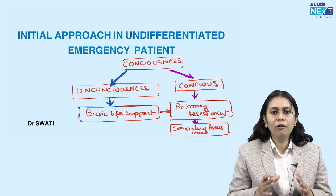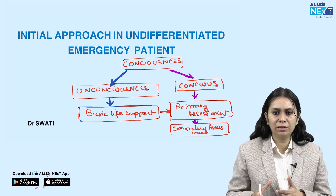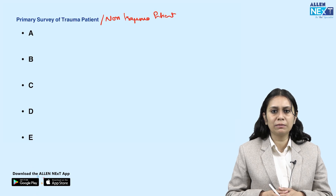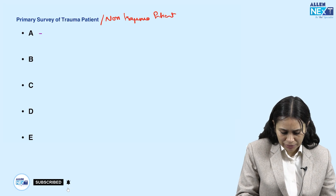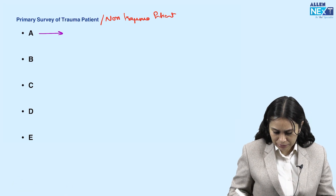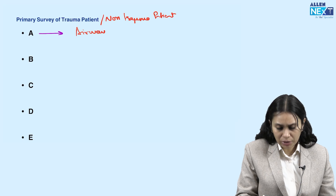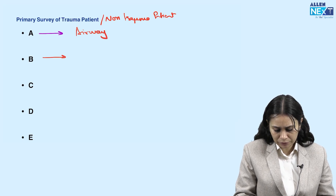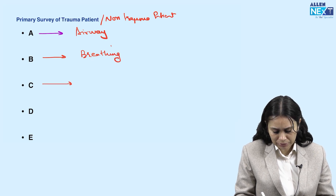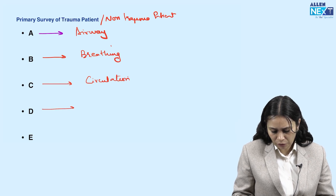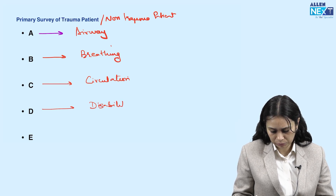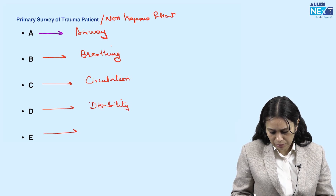This is the approach to an undifferentiated emergency patient. Primary assessment is A, B, C, D, E. A stands for airway, B stands for breathing, C stands for circulation, D for disability, and E for exposure.